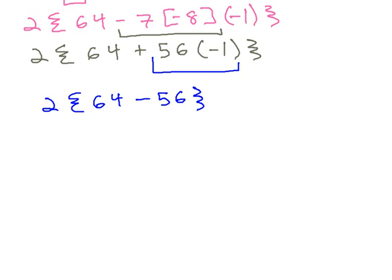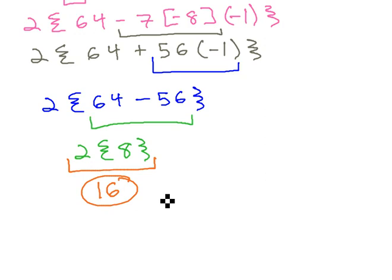And finally, we're ready to finish up those squiggly parentheses. 64 minus 56 is 8. We now have 2 times 8, and we can finally finish this off by multiplying to get our final answer of 16.